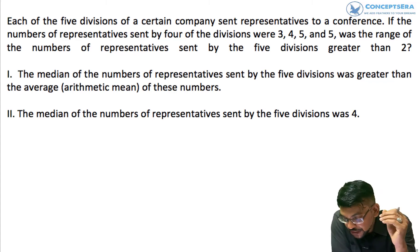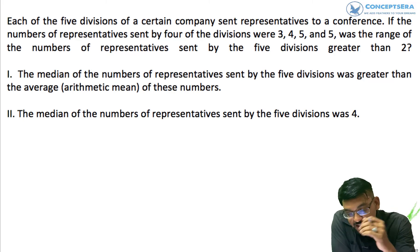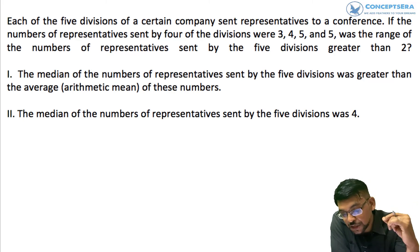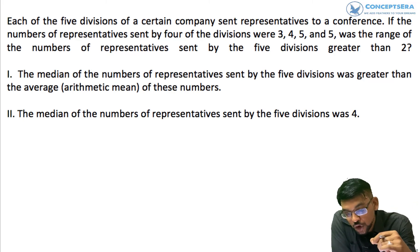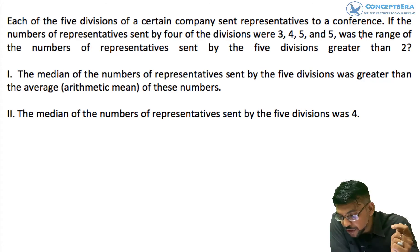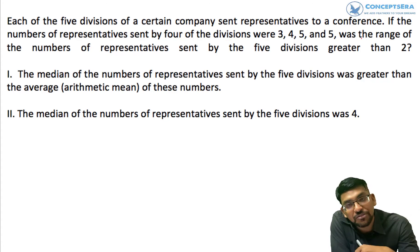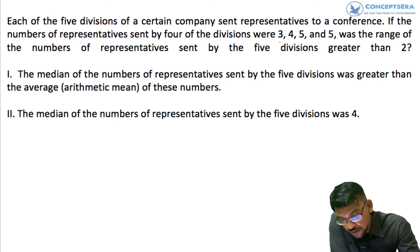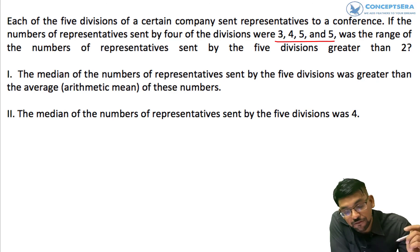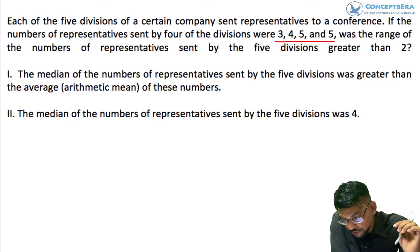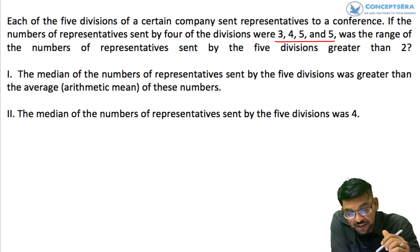The question is: each of 5 divisions of a certain company sent representatives to a conference. If the number of representatives sent by 4 of the divisions were 3, 4, 5, and 5, was the range of the number of representatives sent by the 5 divisions greater than 2?